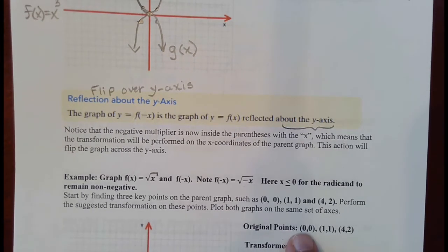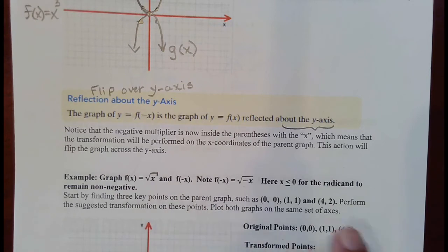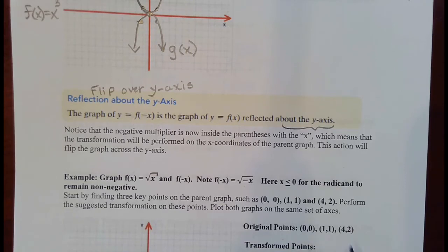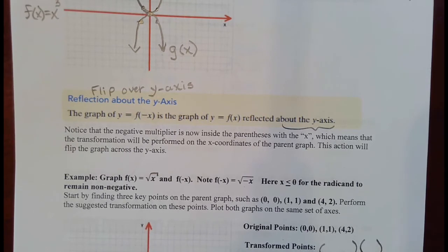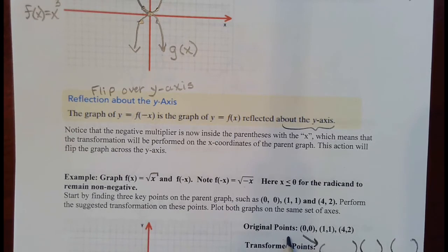For the transformed points, we're taking the X's and multiplying by negative one. So zero times negative one is still zero; one times negative one is negative one; four times negative one is negative four. We're doing nothing to the Y coordinates, so they all remain the same: zero, one, and two. Our transformed points are zero, zero; negative one, one; and negative four, two.